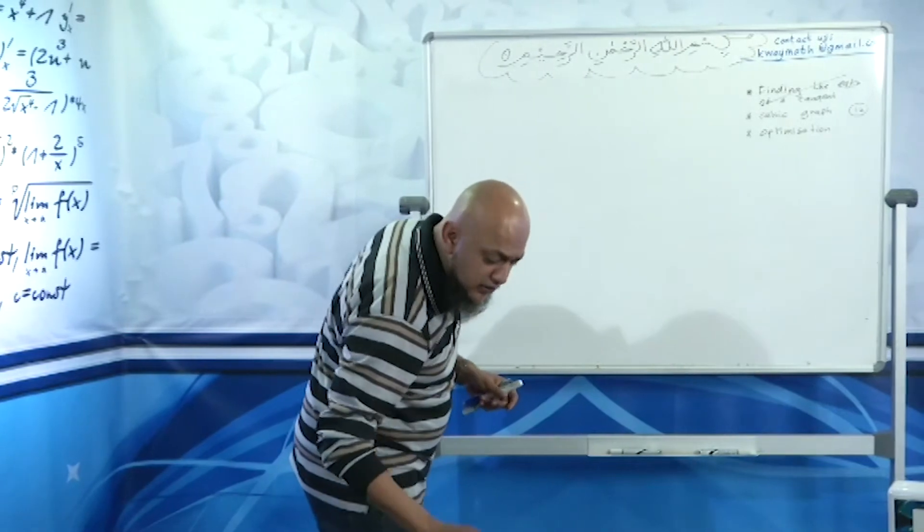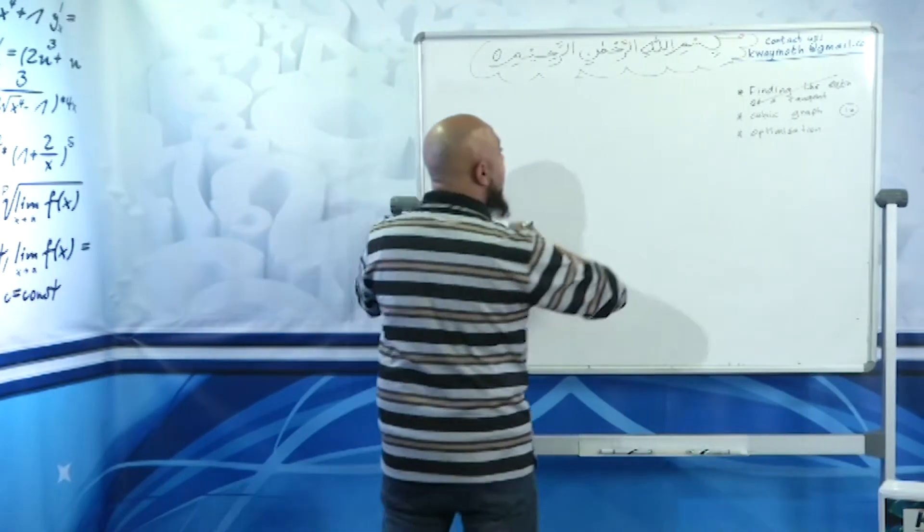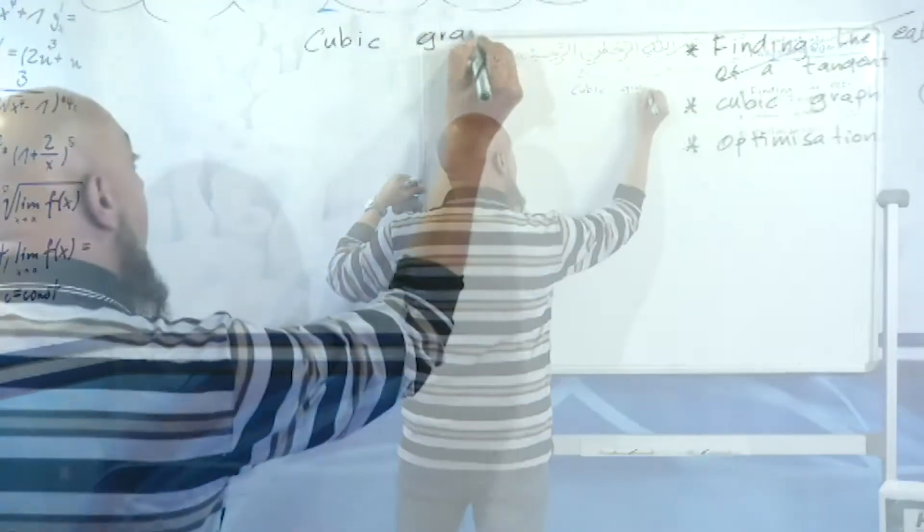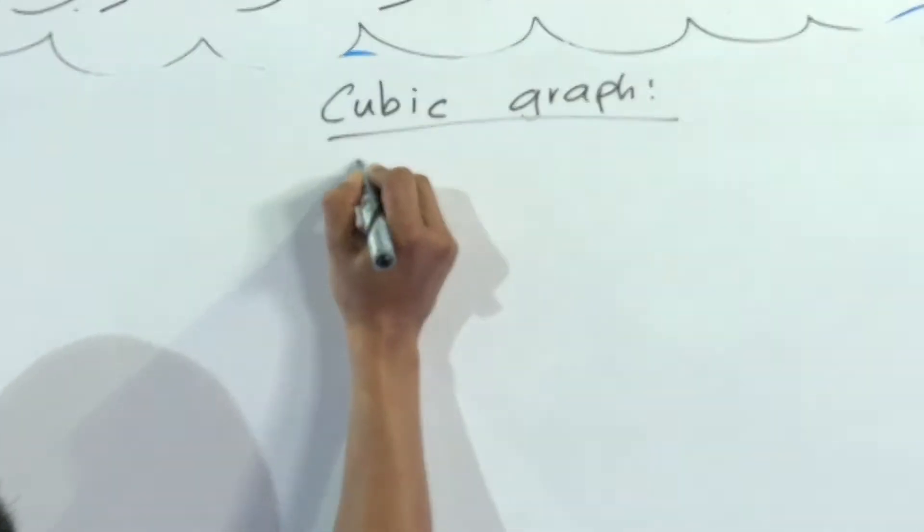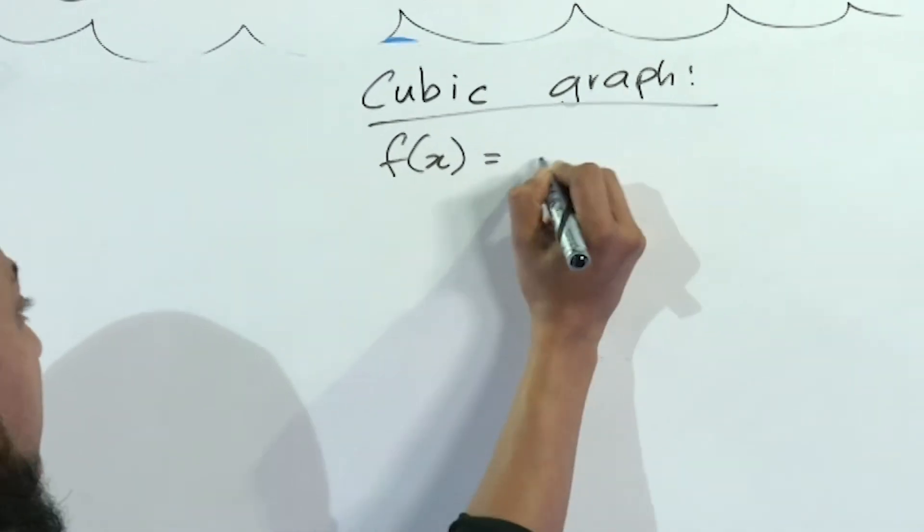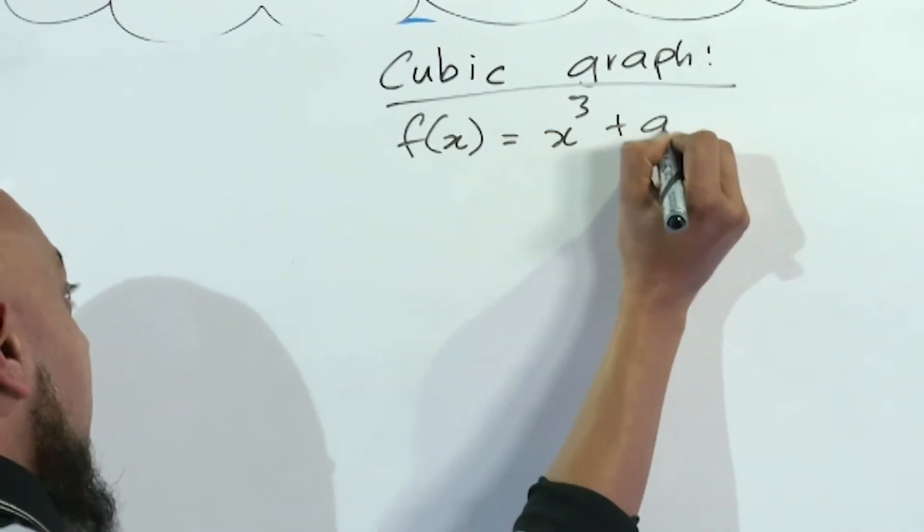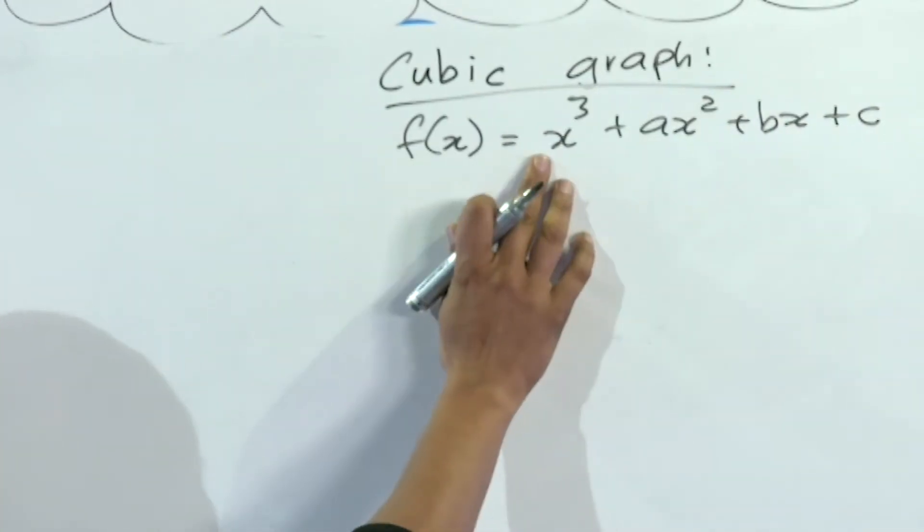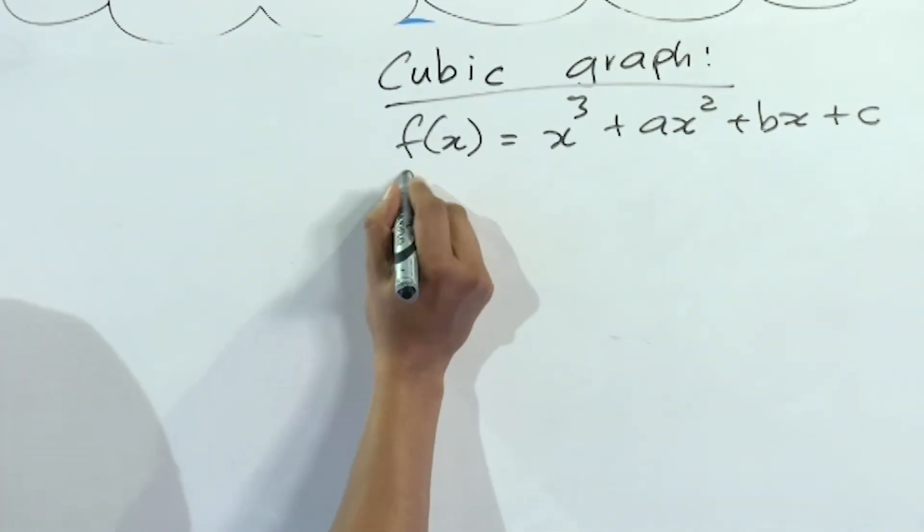Some background knowledge about the cubic function. The standard form for the cubic graph is f(x) = x³ + ax² + bx + c. Sometimes they might give it to you as f(x) = ax³ + bx² + cx + d.